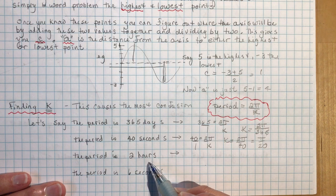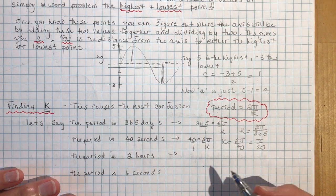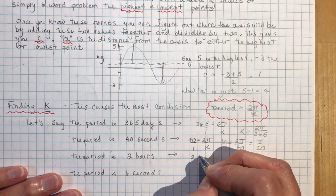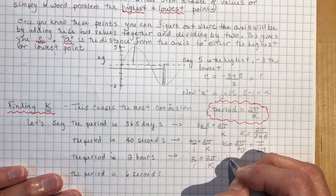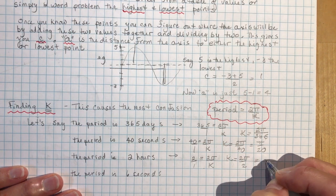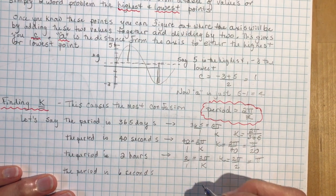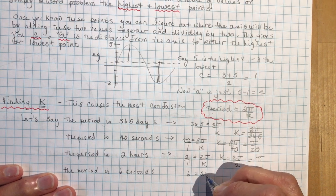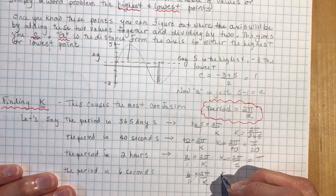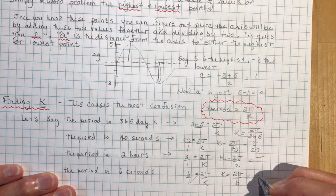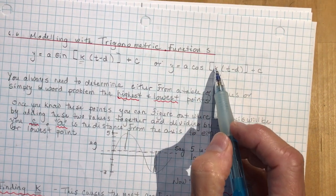If the period is 2 hours, set 2 equal to 2π over K, so K is 2π over 2, which is π. If the period is 6 seconds, K is 2π over 6, which is π over 3. The period can be all sorts of things — 6 seconds, 2 hours, 40 seconds, 365 days, 5 years — and these are the K values you plug into your equation.